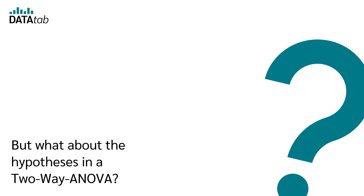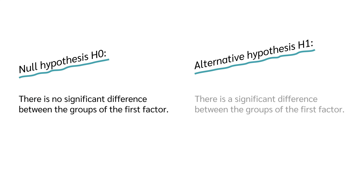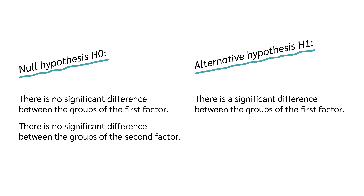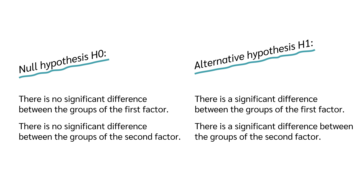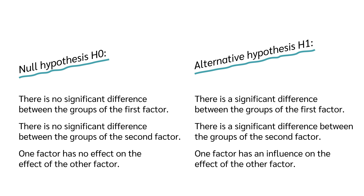There are three null hypotheses and therefore also three alternative hypotheses. The first null hypothesis is: there is no significant difference between the groups of the first factor; alternative: there is a significant difference. The second null hypothesis: no significant difference between the groups of the second factor. The third null hypothesis reflects the interaction effect: one factor has no effect on the effect of the other factor; alternative: at least one factor has an influence on the effect of the other factor.